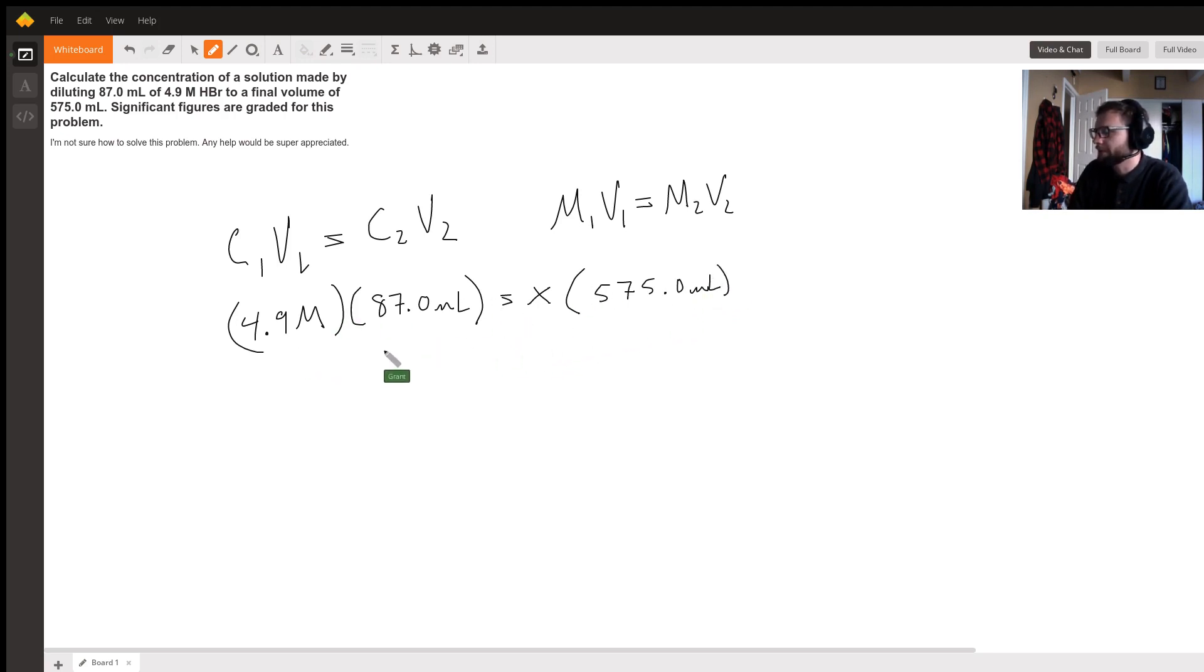Divide both sides by 575. And then we'll get X is equal to, go ahead and use our calculator here, 4.9 times 87 divided by 575.